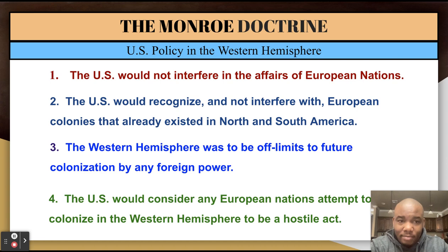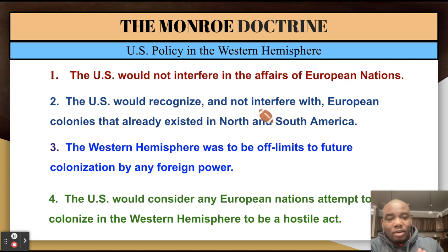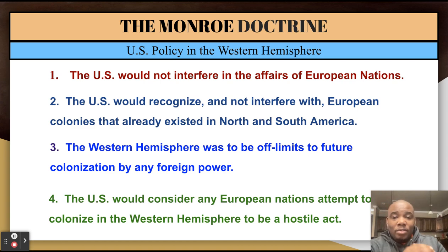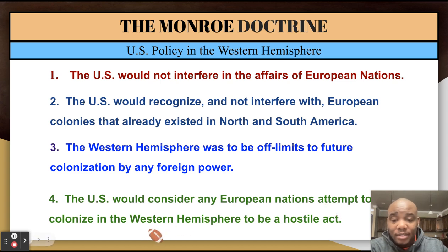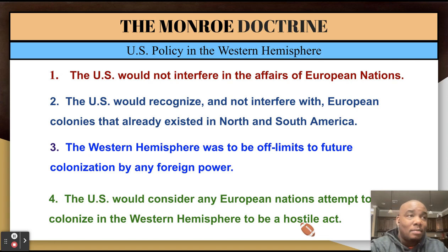To reiterate: no interference in the affairs of European nations; we recognize existing colonies in North and South America and won't interfere with those; but the Western Hemisphere is off limits to future colonization by any foreign power. The U.S. would consider any European nation's attempt to colonize in the Western Hemisphere to be a hostile act, and we'll meet that hostility with more hostility.